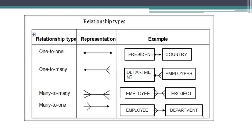The graphical representations for relationship types: one-to-one uses a single line with single arrow marks — example is president and country. One-to-many — example is department and employees. Many-to-many uses a straight line with double arrow marks — example is employee and project, where number of employees are involved in number of projects. Many-to-one — number of employees working for one department.